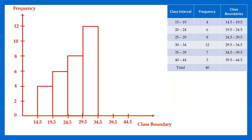The next class, from 34.5 to 39.5, has frequency 7. The final class, from 39.5 to 44.5, has frequency 3. That is the histogram of this frequency distribution.